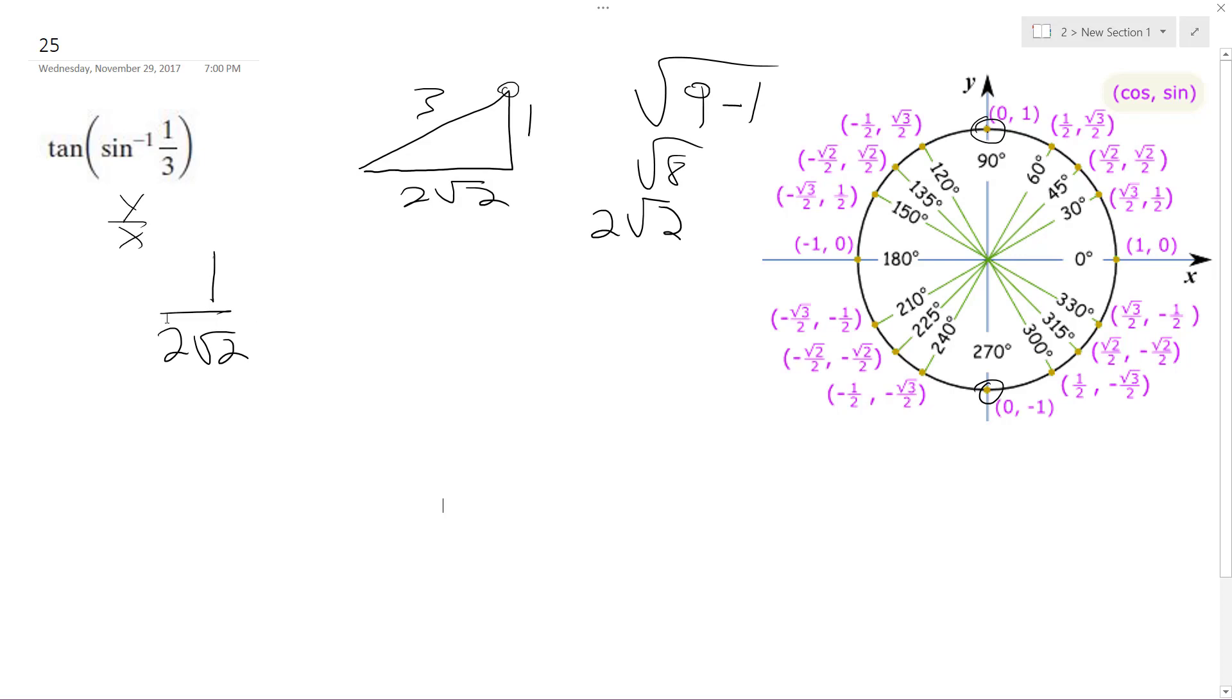And we rationalize the denominator by multiplying root two over root two. So this becomes root two over two, which equals root two over four.